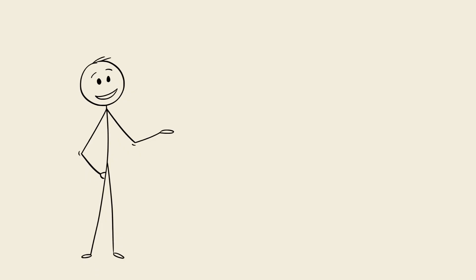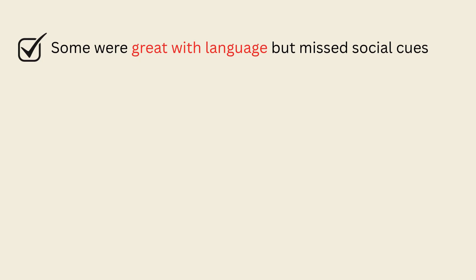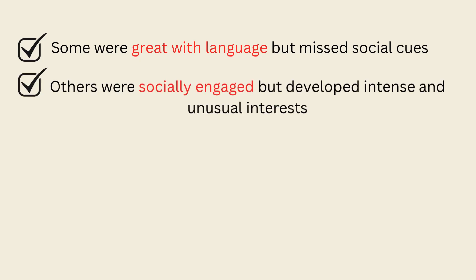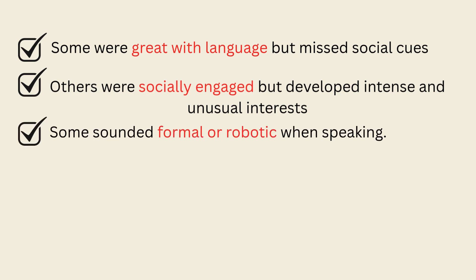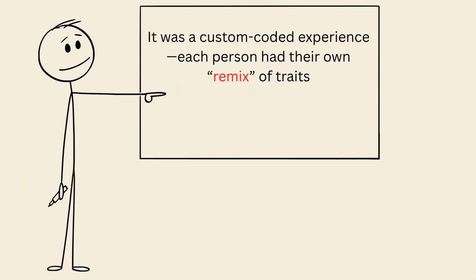Because there was no single uniform set of symptoms, every person with PDD-NOS looked different. Some were great with language but missed social cues. Others were socially engaged but developed intense and unusual interests. Some sounded formal or robotic when speaking, while others mixed typical speech with echolalia. It was a custom-coded experience — each person had their own remix of traits.